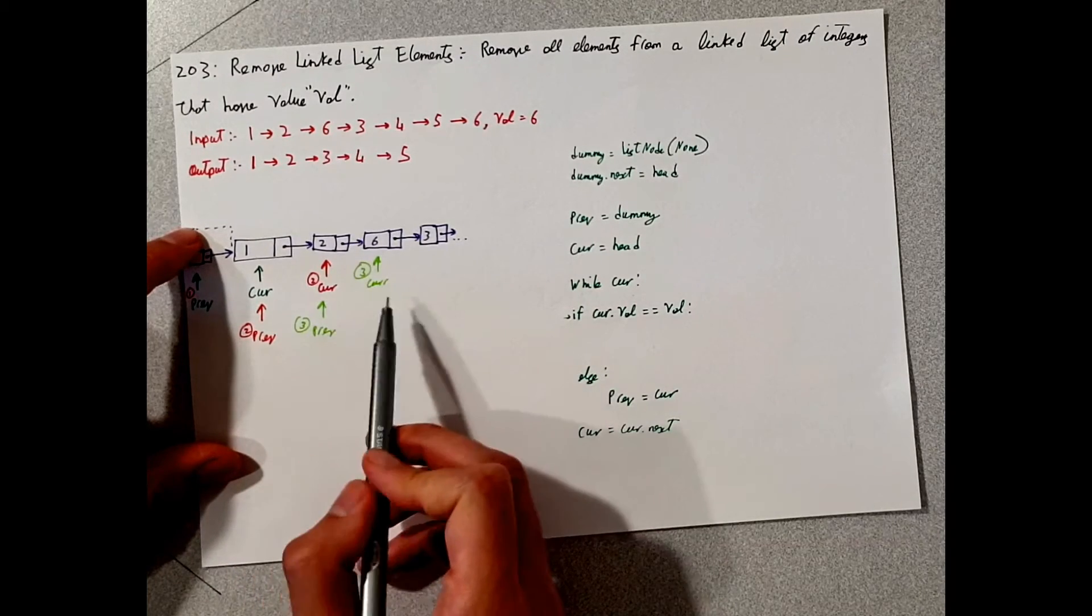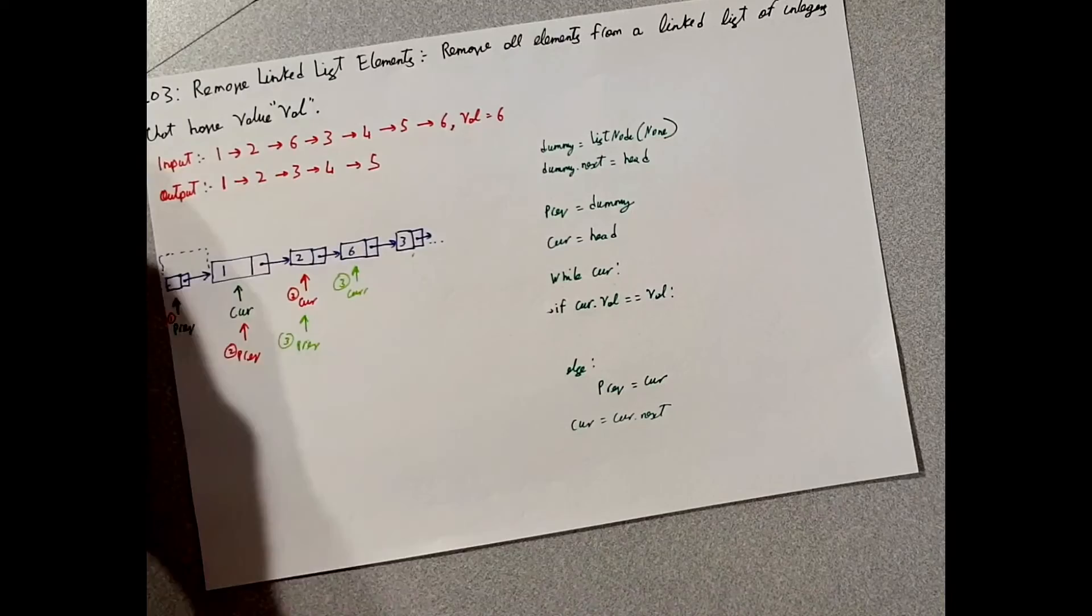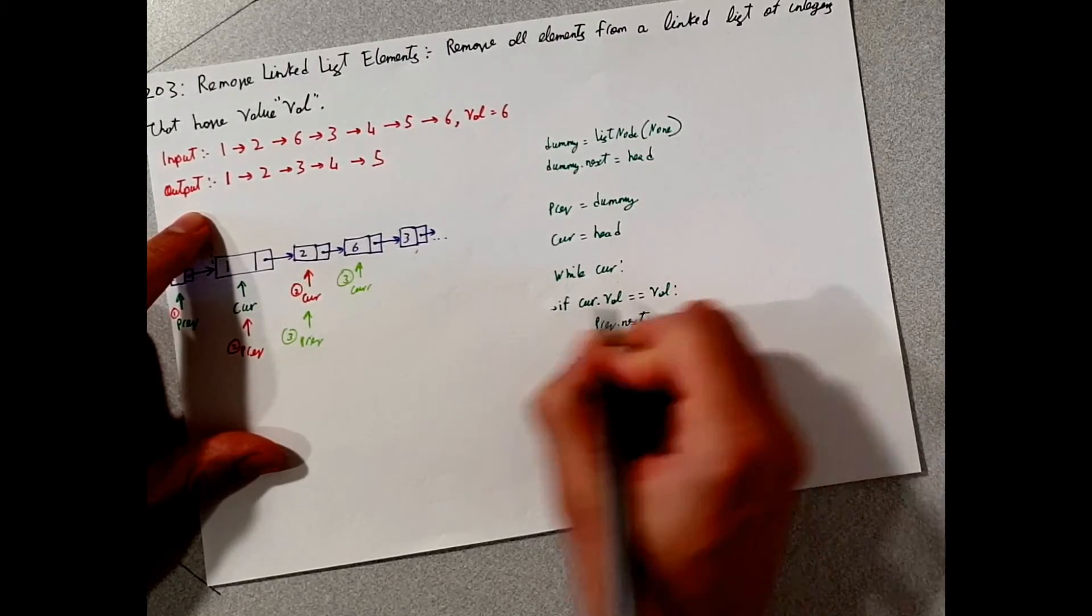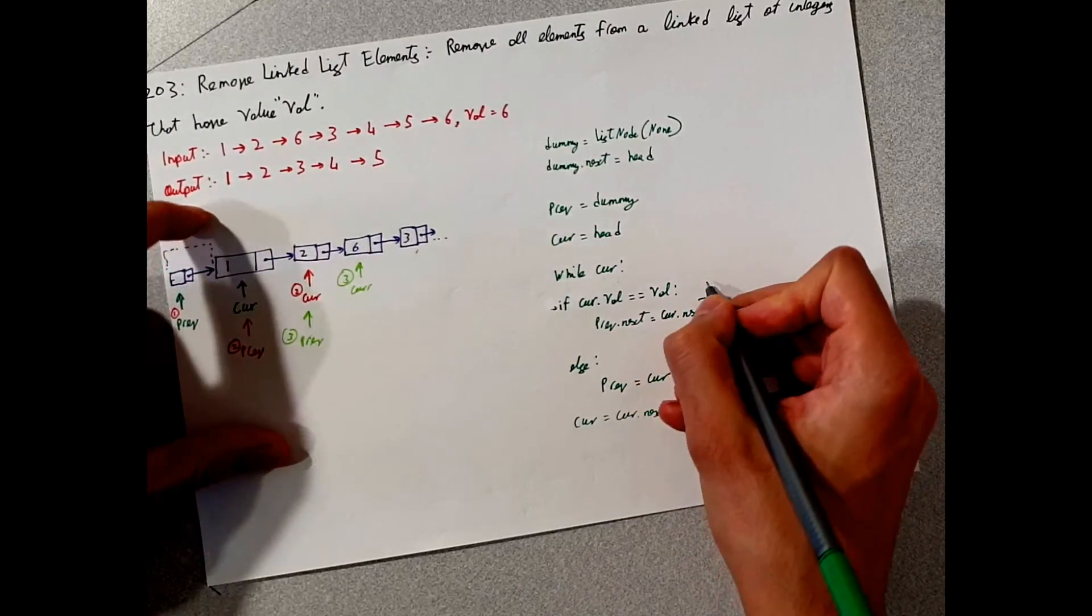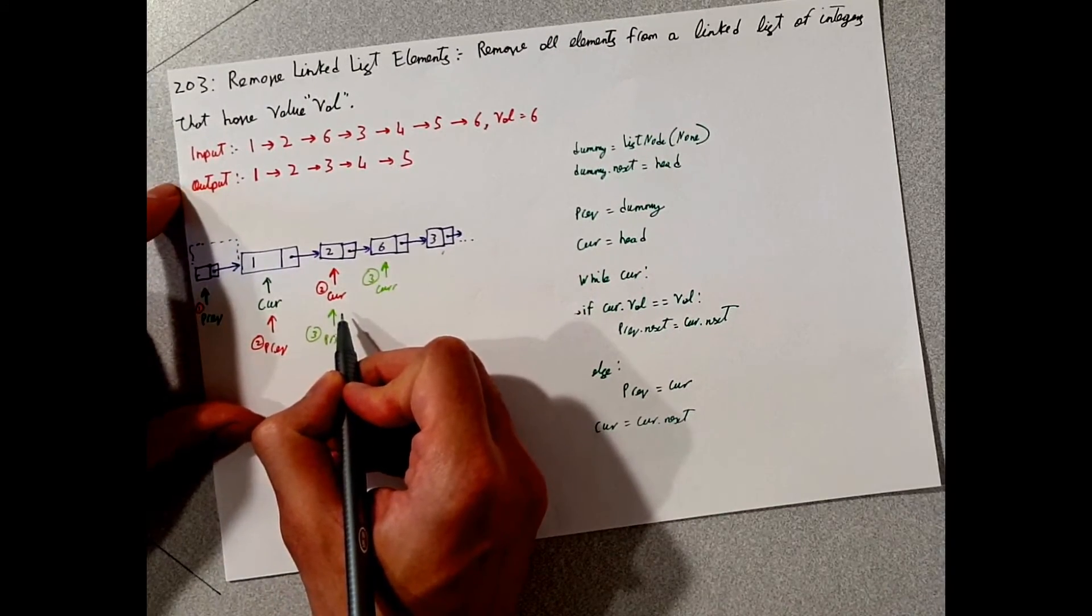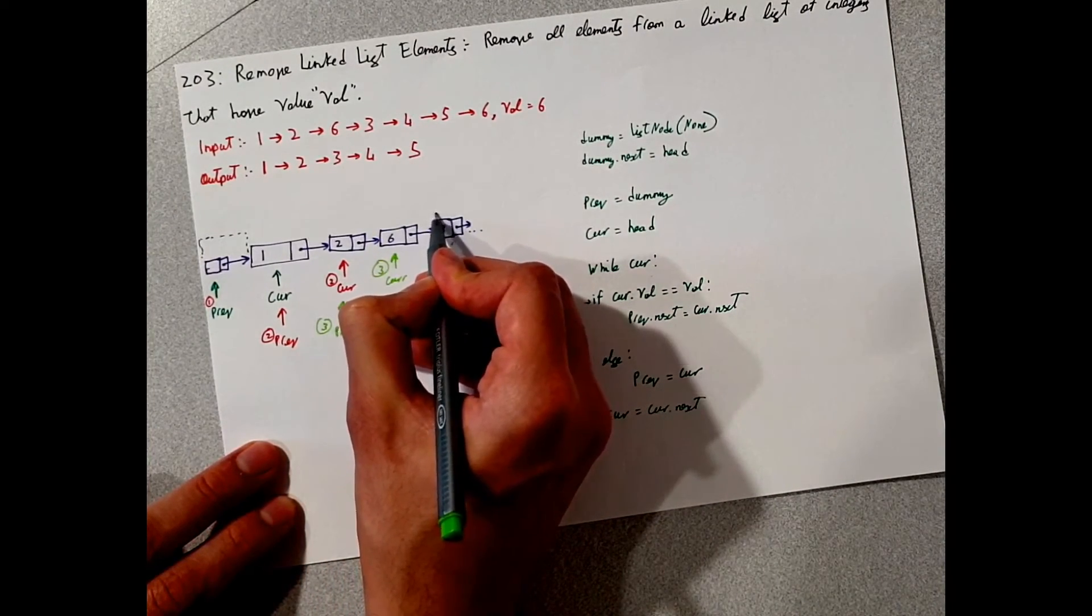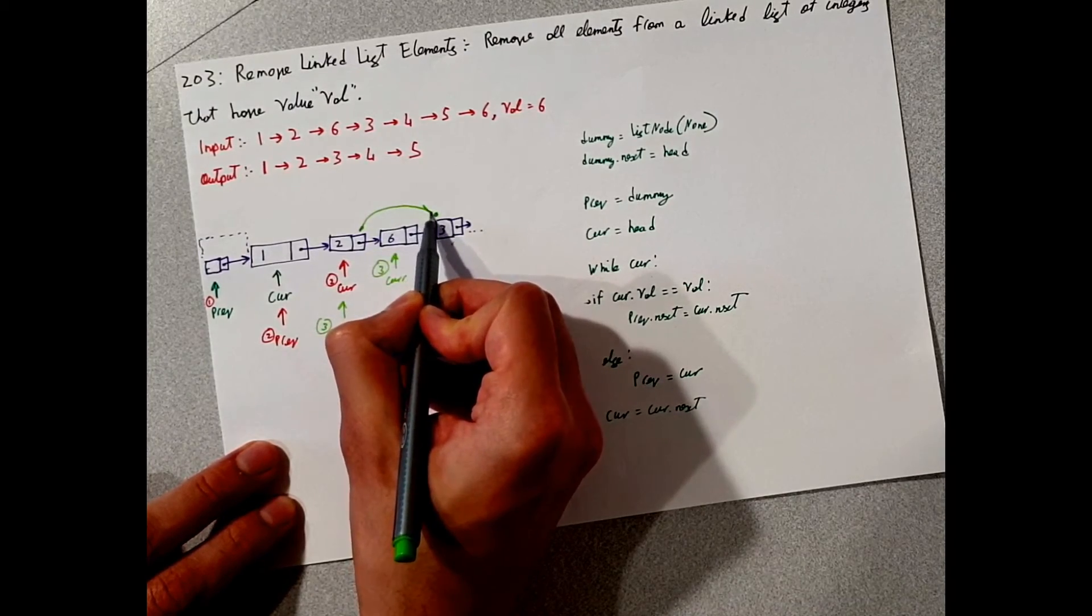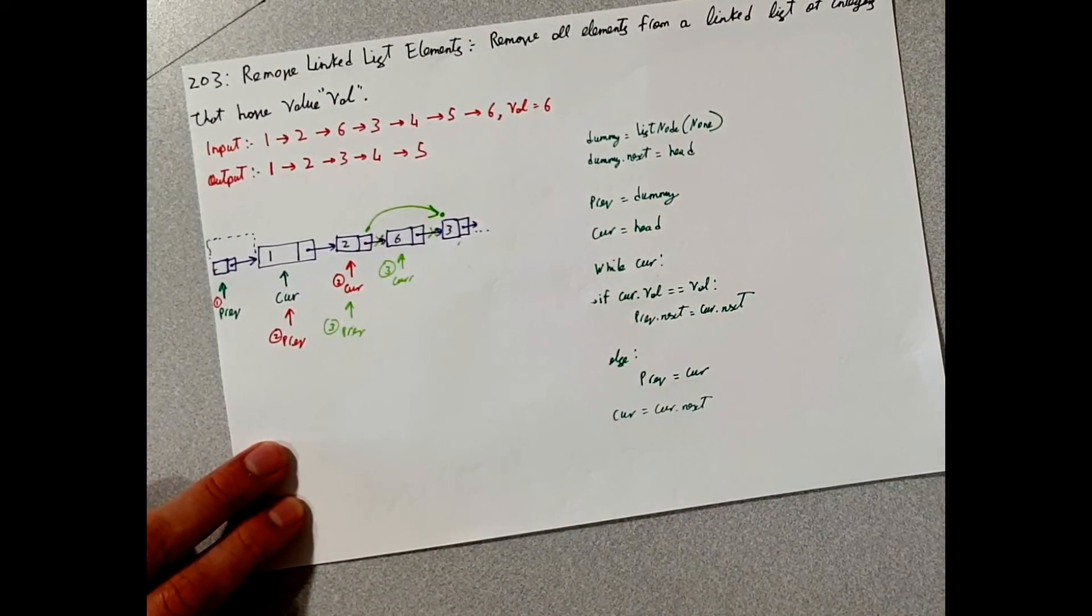So what we will do is we're going to move current to here and make the next of this point there. So in code, that would be, so the value for previous.next will now be the current.next. So if we were to imagine this, this will basically say the current.next, which is right here, will be where previous.next point. So this is basically going to look like this. And then since this is looking there, this connection is going to go and this connection is going to go.